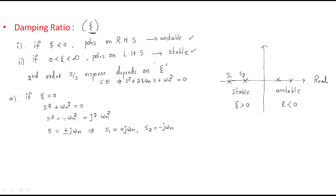In the s-plane, with the real axis horizontal and the imaginary axis vertical, plus j omega n is on the positive imaginary axis so pole s1 is here, and minus j omega n is on the negative imaginary axis so pole s2 is here. So in order to place the poles on the imaginary axis, the damping ratio must be equal to zero.